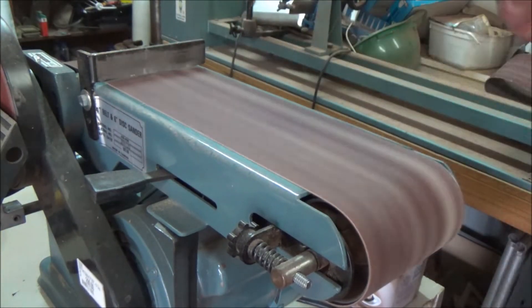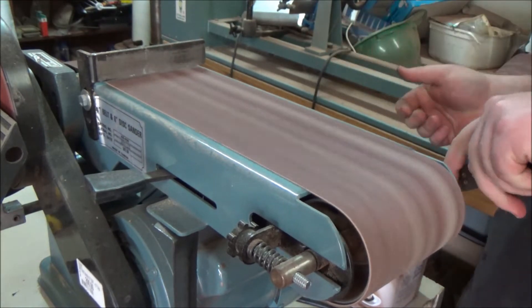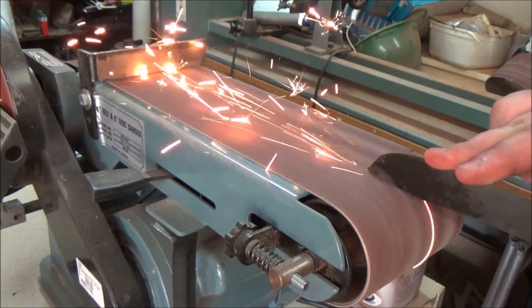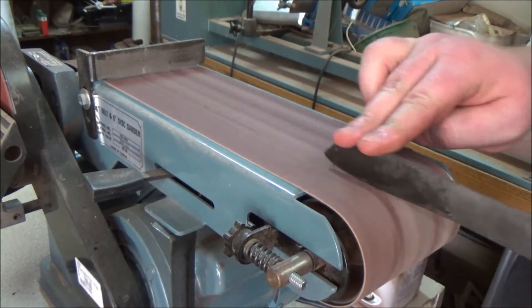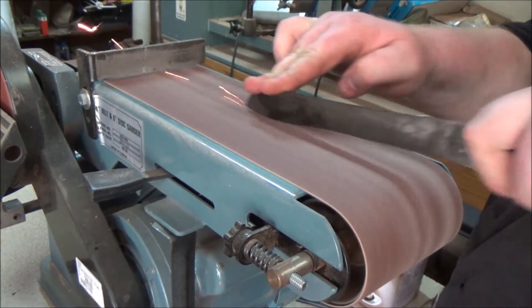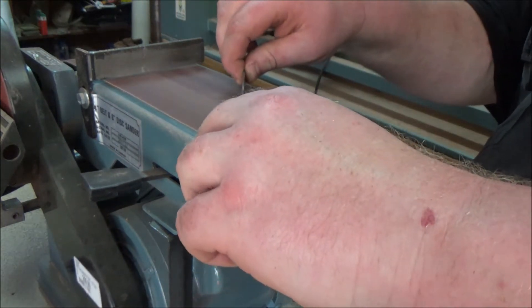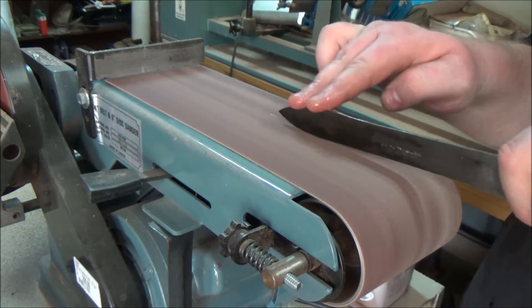I then ground off the heavily pitted tip and shaped the blade into a drop point design, whilst also taking out the recurve which had developed after decades of sharpening. The trick is to take it slow and keep the blade cool. If it gets too hot, it will soften the steel.